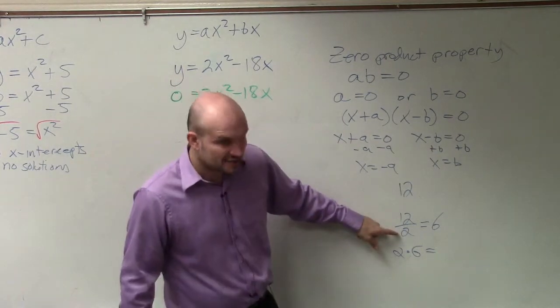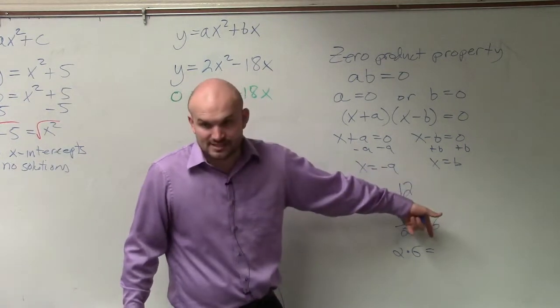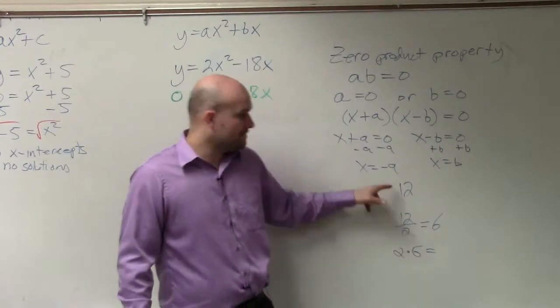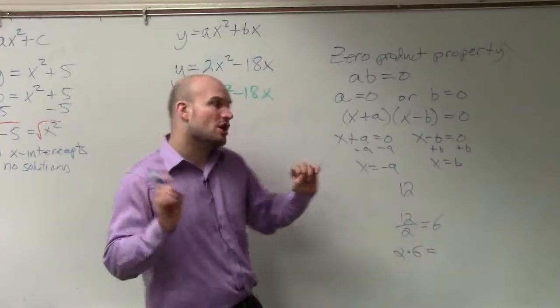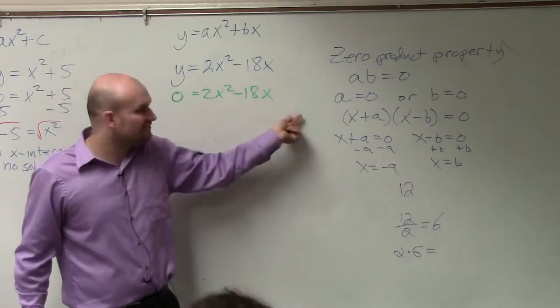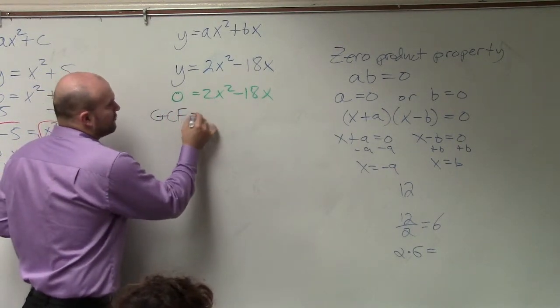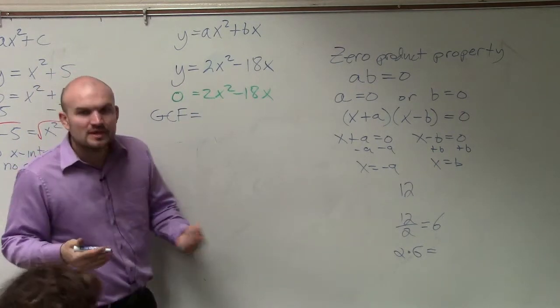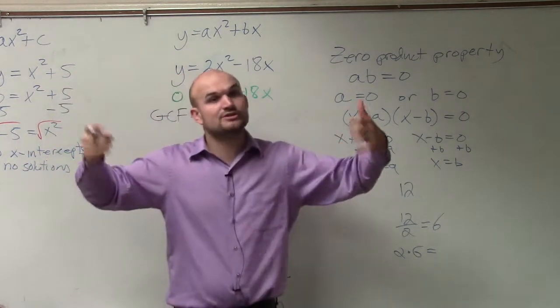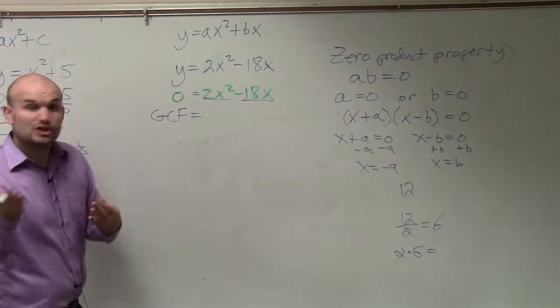If you take your divisor, what you're dividing by, and multiply it by the quotient, what the answer is, you get back your original problem. So what we need to do is we need to figure out a divisor of this. What can I divide into both of those? And our divisor we're going to call our GCF, which is our greatest common factor.